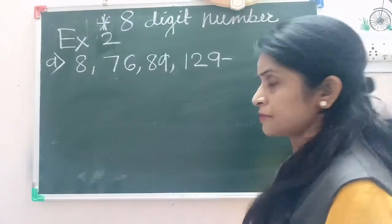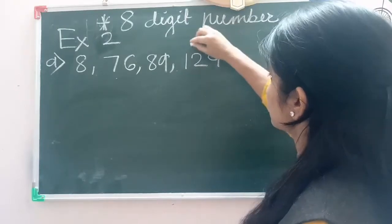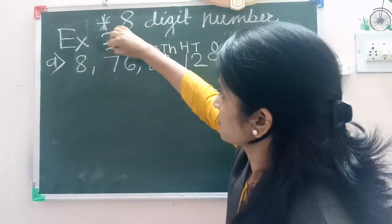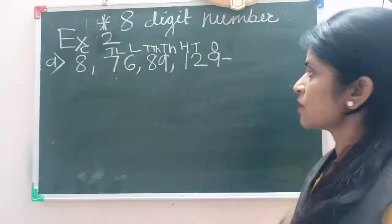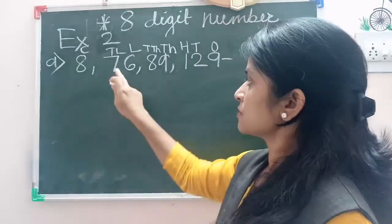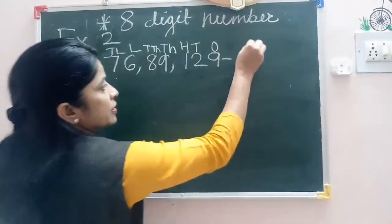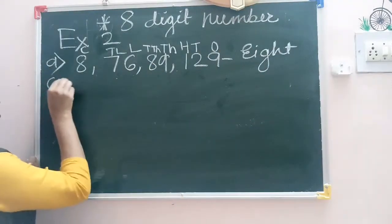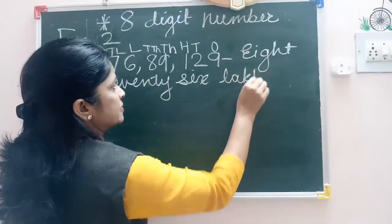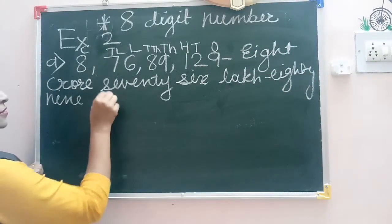Now here an 8-digit number is given. First of all, we will write the place on the number: this is 1s, 10s, 100, 1000, 10,000, lakh, 10 lakh, and crore. Now we will write the period separately: 8 crore, 76 lakh, 89,000.